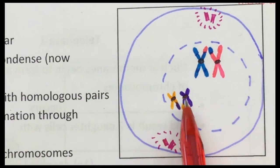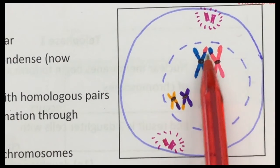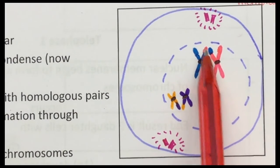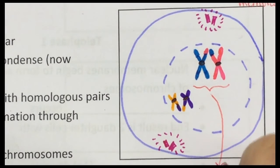We still need our centromeres. If we look, see the purple has a little bit of yellow, yellow has a little bit of purple, pink has a little bit of blue, blue has a little bit of pink.